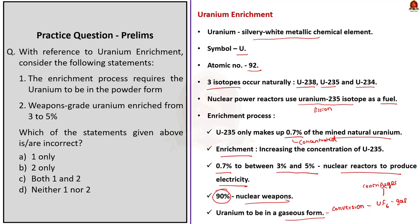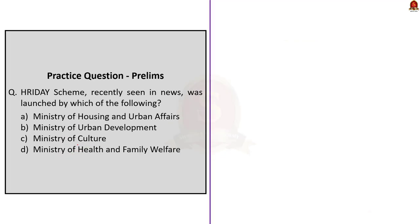Now see the question. Statement 1 is incorrect — the uranium has to be in gaseous form. Statement 2 is also incorrect — uranium used for nuclear weapons would have to be enriched to at least 90% uranium-235. Here, the answer is option C because the question asks for the incorrect statements. With this, let us move on to our next question.